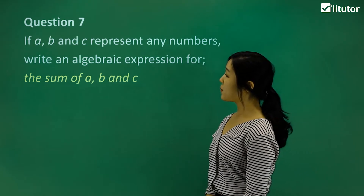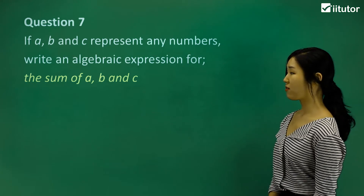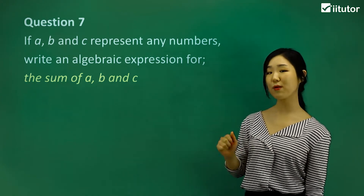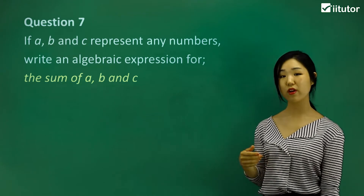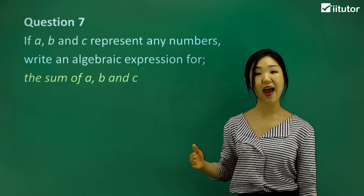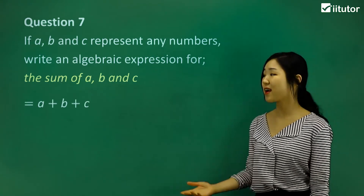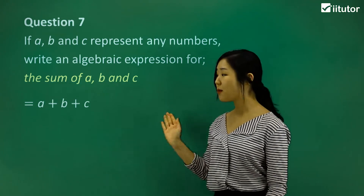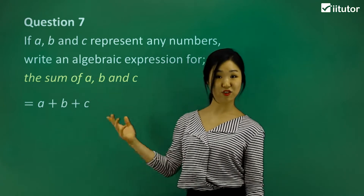Question seven: if a, b, and c represent any numbers, write an algebraic expression for the sum of a, b, and c. We've got three variables here — a, b, and c — and we want to find the sum. Sum means adding — addition. So it's simply a plus b plus c. We can't go any further because there are no more like terms. Make sure you know that sum means addition.